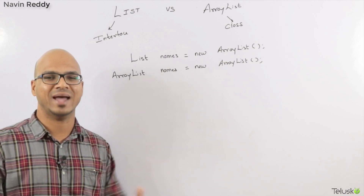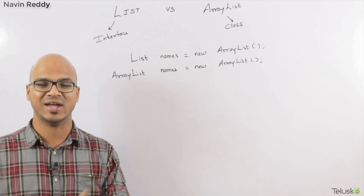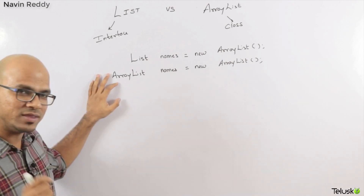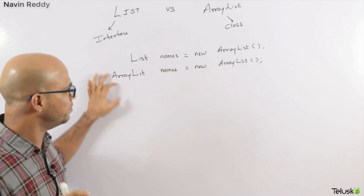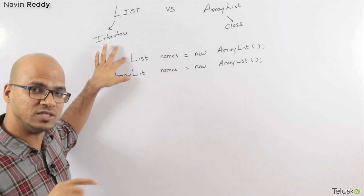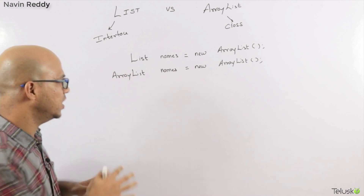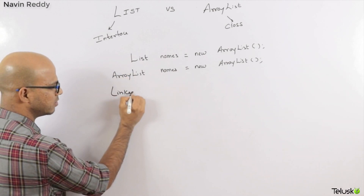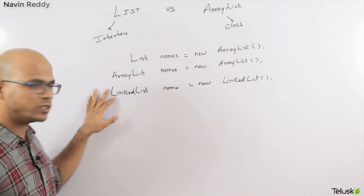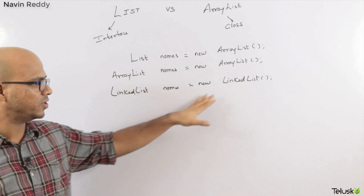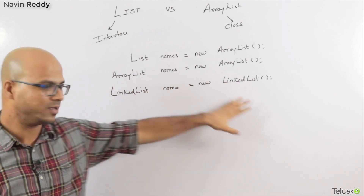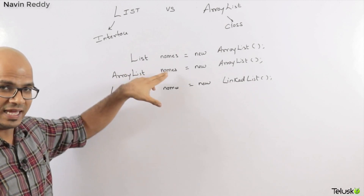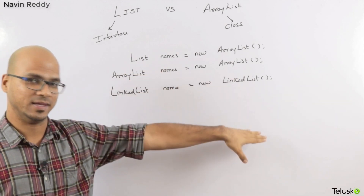I do have a video on YouTube on the difference between LinkedList and ArrayList. The ArrayList class implements List. There is one more class called LinkedList, so we can also create a LinkedList. We can say: LinkedList names = new LinkedList, or we can say: List names = new LinkedList. So why use List as the interface reference?